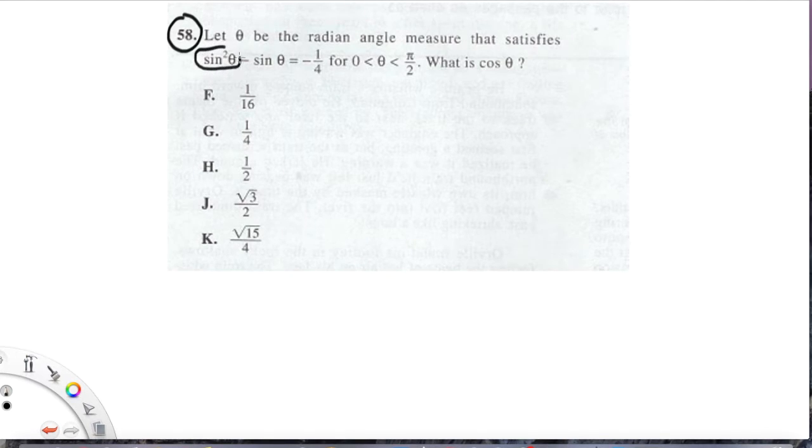We're going to call sine x and sine squared x squared, so we're going to change these two so that our equation that we're interested in for the time being is x squared minus x, where x just equals sine theta. That's allowed, you can do that. We're just substituting in here. So this equation, x squared minus x equals negative one-fourth.